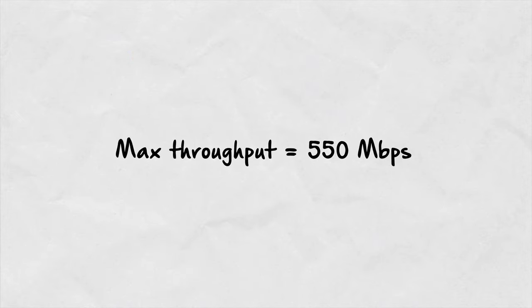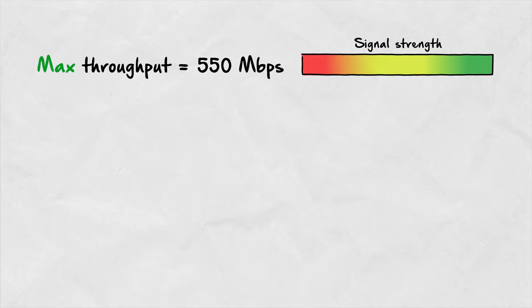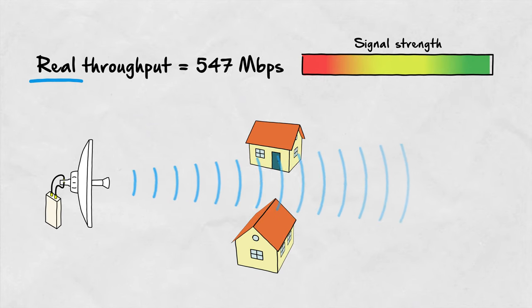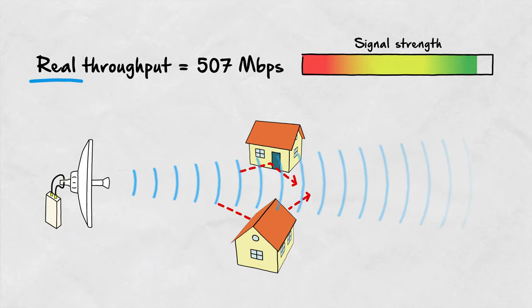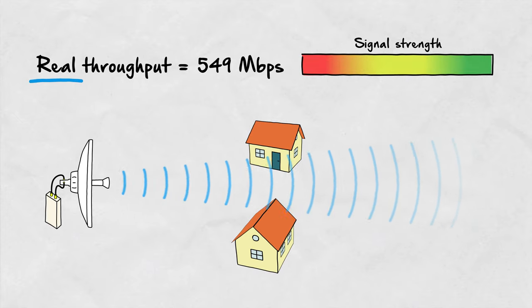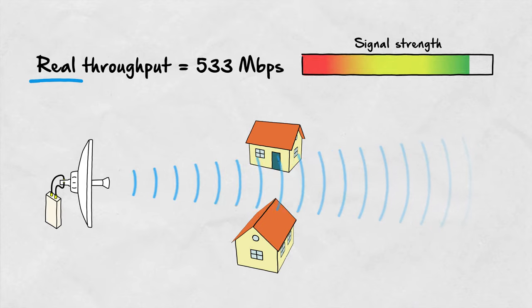In reality, the throughput your link is able to deliver can only approach the theoretical maximum you find in a datasheet. The multipath propagation of RF signal causes smaller or larger losses to the signal power, influencing the received signal strength and eventually the real throughput you can work with.